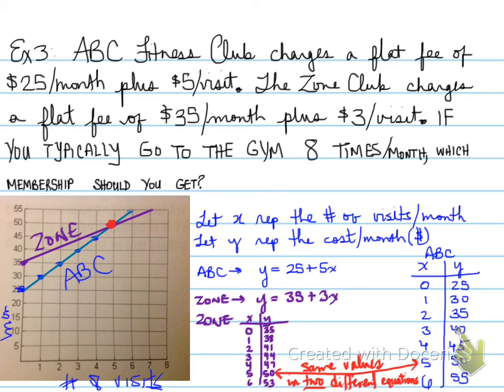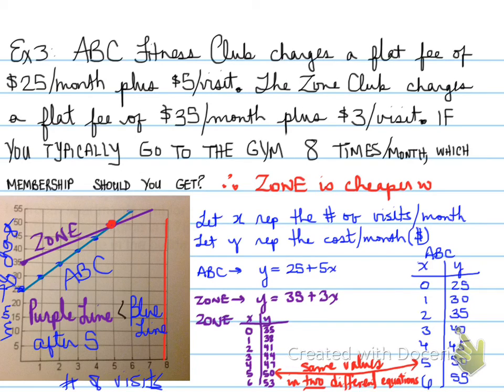So, with Zone and ABC, and don't forget, you need to label the axes to make sure the axes have labels, otherwise no one can figure out what they're actually looking at. And we can make the following conclusion. Since the purple line is less than the blue line after five visits, we can say that Zone is cheaper with eight visits. And you could have also looked at the equation to be able to get you the same problem.